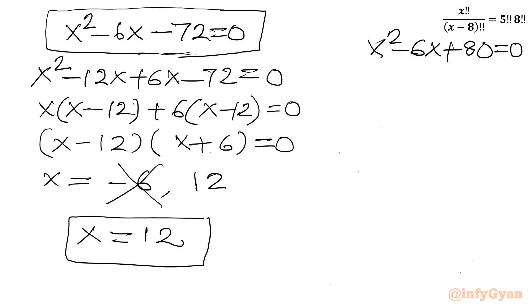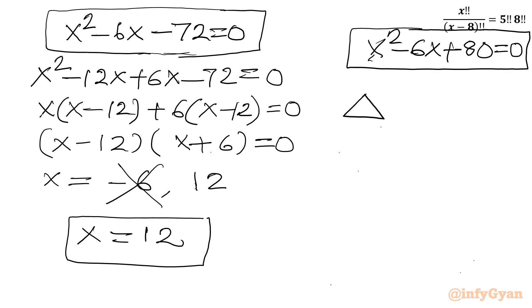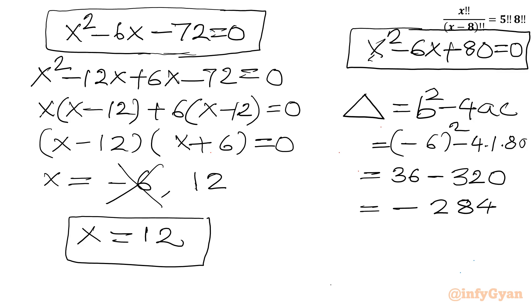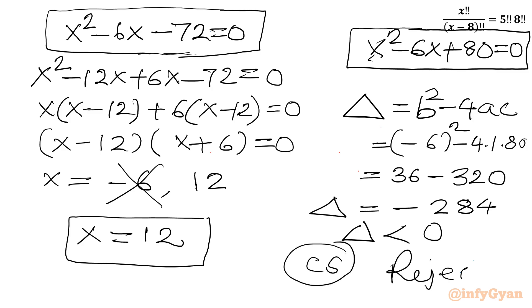Now let us consider the second quadratic equation: x squared minus 6x plus 80 equals 0. I will only check the discriminant. It is b squared minus 4ac: minus 6 whole squared minus 4 times 1 times 80, which is 36 minus 320, giving minus 284. The discriminant is negative, so complex solutions will be generated. I will reject this equation for our solution.